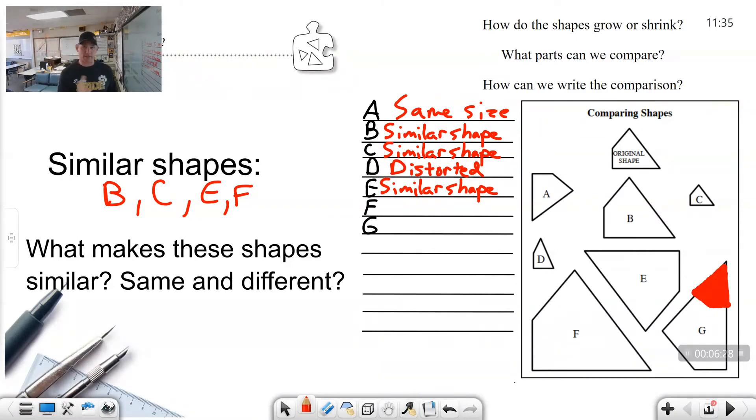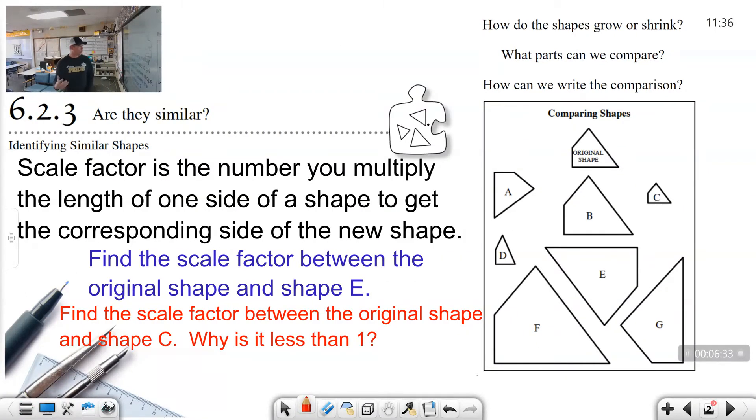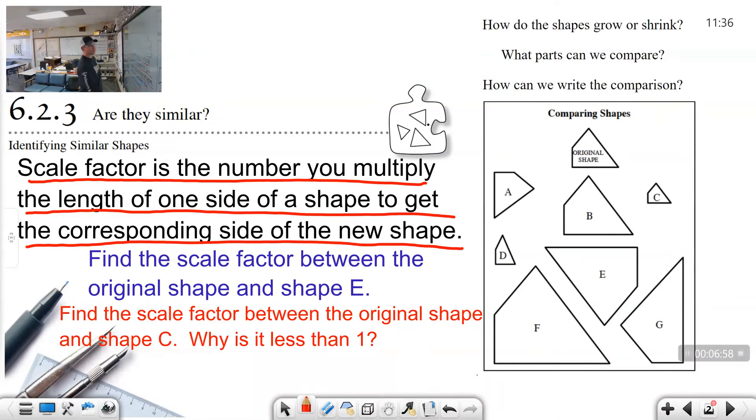It's good to be able to recognize that shapes are similar, but we also need to be able to recognize when we have a scale factor. Scale factor is the new word that we're going to use for when a shape has been multiplied by a number. And off to the side where you have a couple lines left, I want you to record: Scale factor is the number you multiply the length of one side of a shape to get the corresponding side of the new shape. That's a lot. Go ahead and write that down right now.